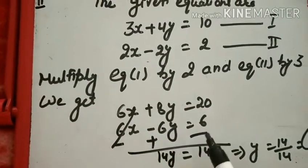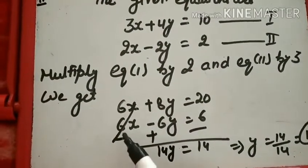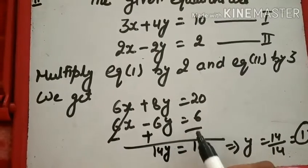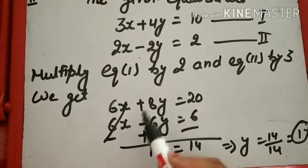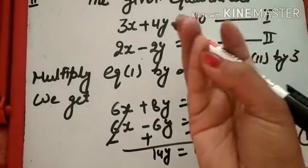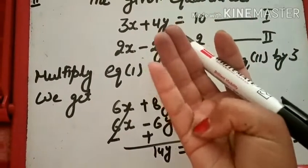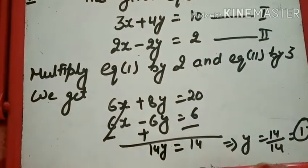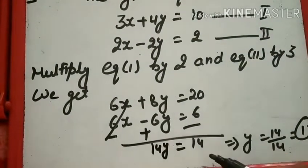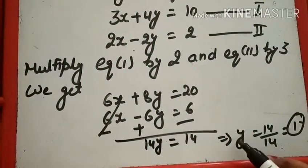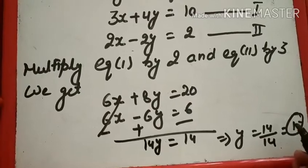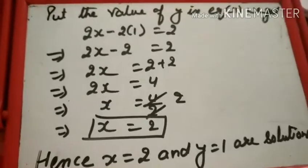अब Sign change: plus है तो minus, minus है तो plus, plus है तो minus। X कट गया। 8Y + 6Y = 14Y, and 20 − 6 = 14. This implies Y = 14/14 = 1.